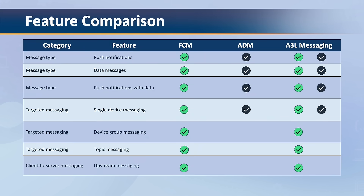The following table shows the features offered in the A3L messaging SDK as compared to Fire Cloud Messaging (FCM) and Amazon Device Messaging (ADM). The green shows features supported on Android devices and the black shows features supported on Fire OS devices. For example, with A3L messaging you can send push notifications to engage with your users or send custom data messages to be processed by your app.